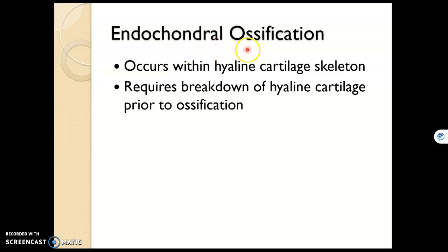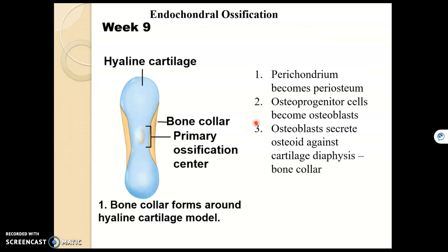With endochondral ossification, these are most of the bones in our skeleton — not the clavicles, not the flat bones, but all other bones. We start with a hyaline cartilage skeleton and perform ossification to develop a bone skeleton. In the embryo, in the perichondrium — the membrane around cartilage — we have chondroblasts, which become osteoblasts. They secrete bone matrix, and you can see the bone forming like a collar around the diaphysis.